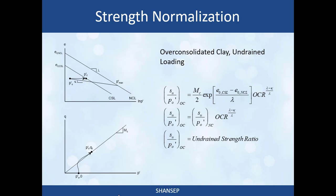When we go to over-consolidated loading, we found that there was an additional OCR term that had to be added. So the undrained strength ratio for over-consolidated soil equals the normally consolidated strength ratio times OCR to the power of (lambda minus kappa) divided by lambda, where lambda is the slope of the normal consolidation line and critical state line, and kappa is the slope of the unload-reload line. We'll call this SU over P naught prime OC, the undrained strength ratio.